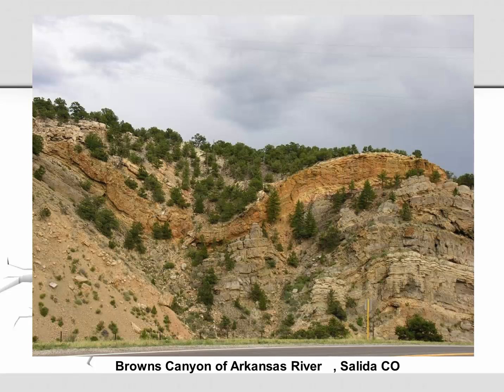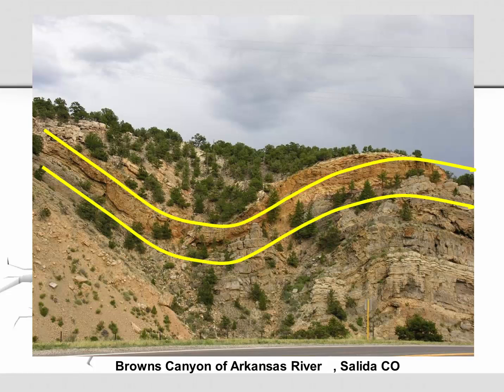Browns Canyon of the Arkansas River goes through Salida, Colorado. Here we can see rock layers that have been folded. This must have occurred through compression or convergent motion — it's impossible to make a fold by pulling.